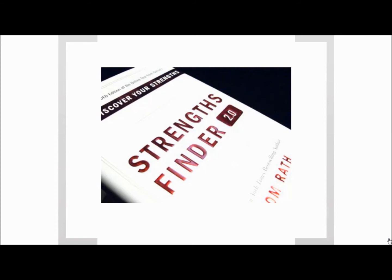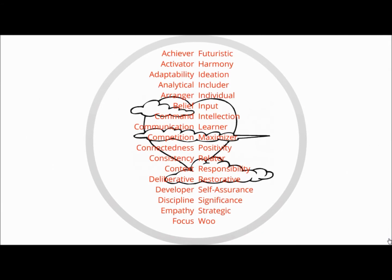Strengths Finder posits there are 34 major themes about humanity. And that all of us fall under four or five of them, have those kind of core strengths at our heart. And if we can identify those four or five, we can begin to channel more energy into those and therefore have more success.